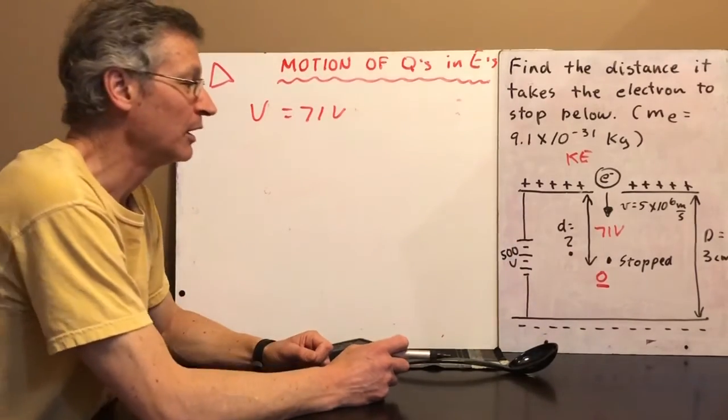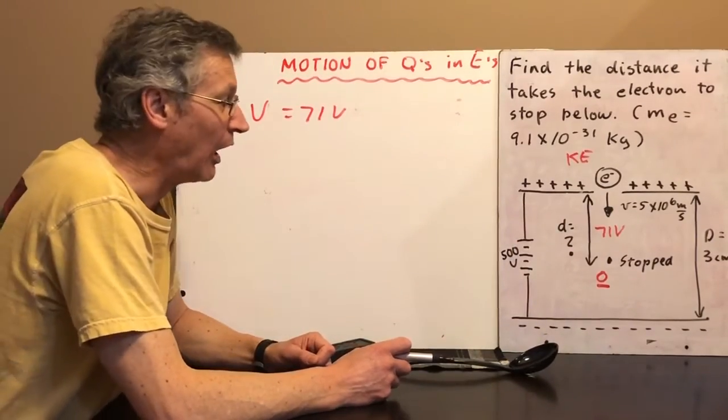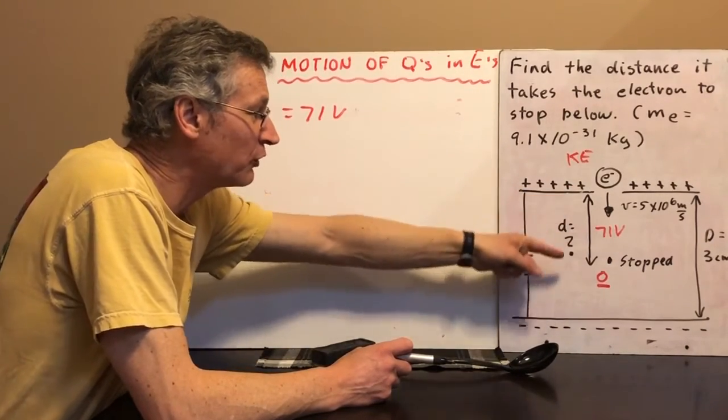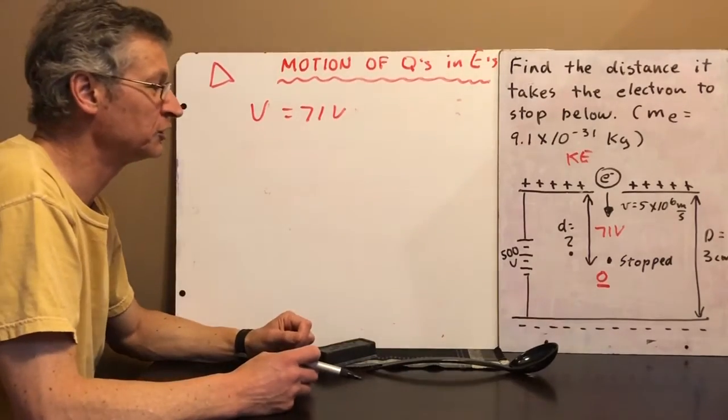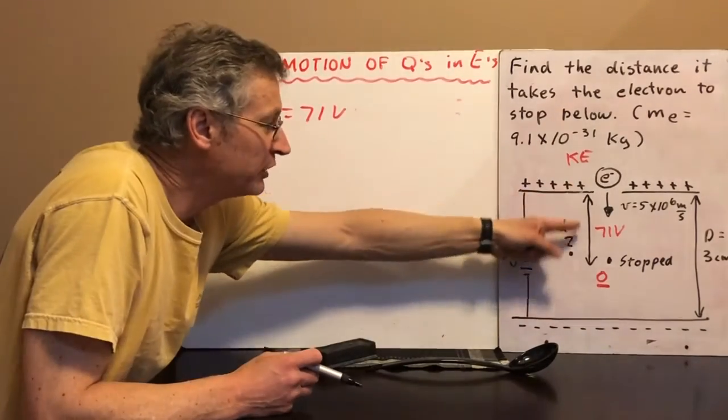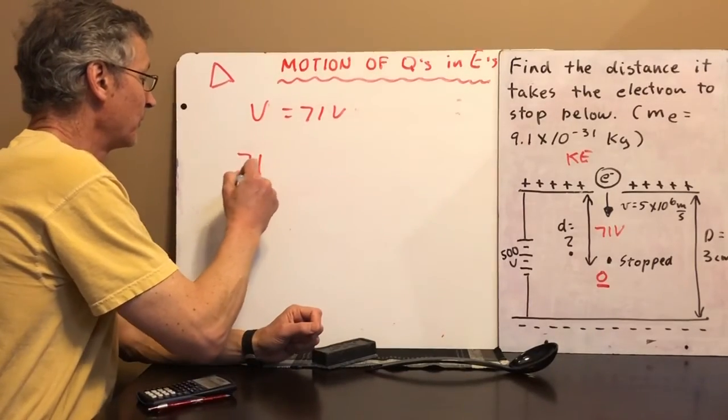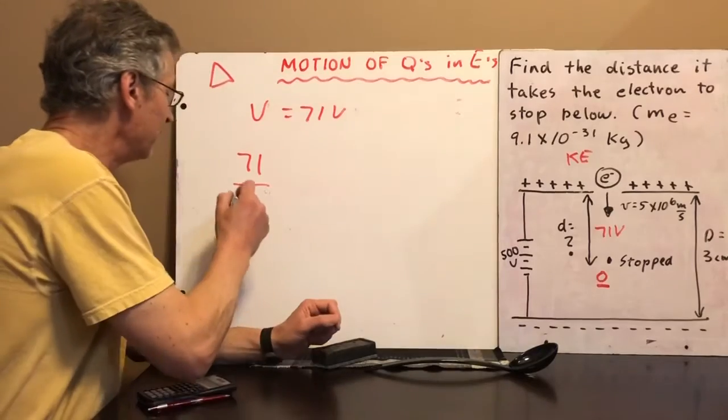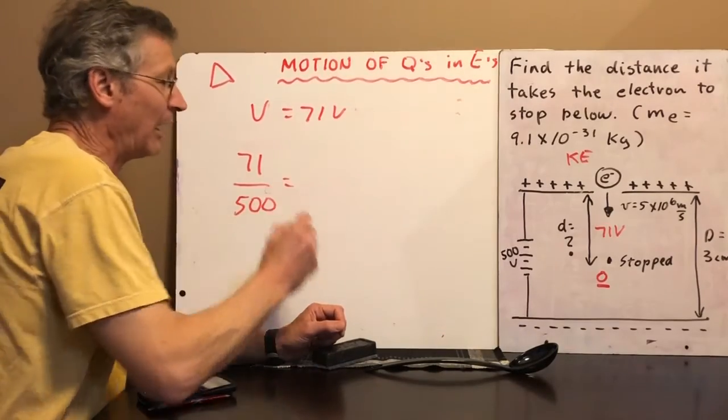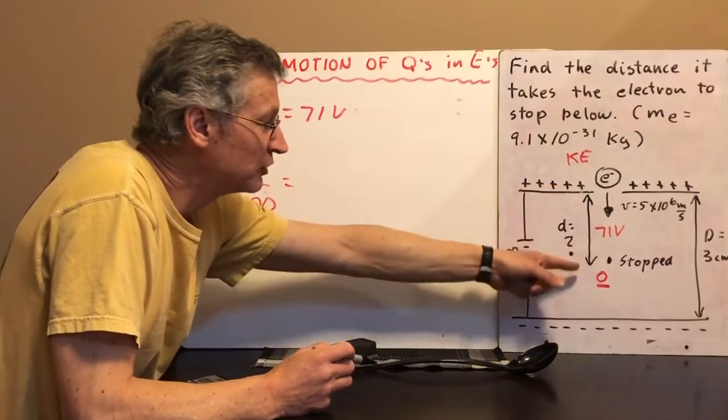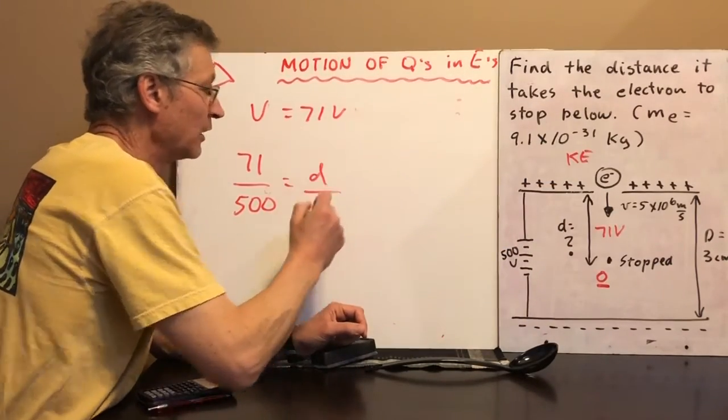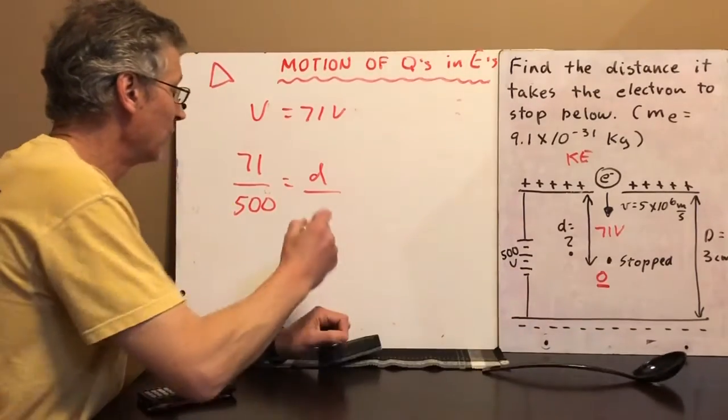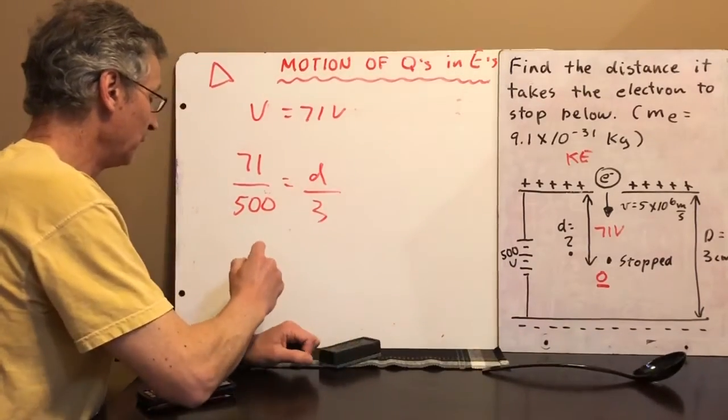Easy enough. Remember, in a situation like this, the voltage is proportional to the distance. So you can write ratios involving voltages and distances. How about this? The little voltage, 71, is to the big voltage, 500, as the little distance, small d, that's what we're interested in, is to the big distance. Over there, what do we got? 3 centimeters.